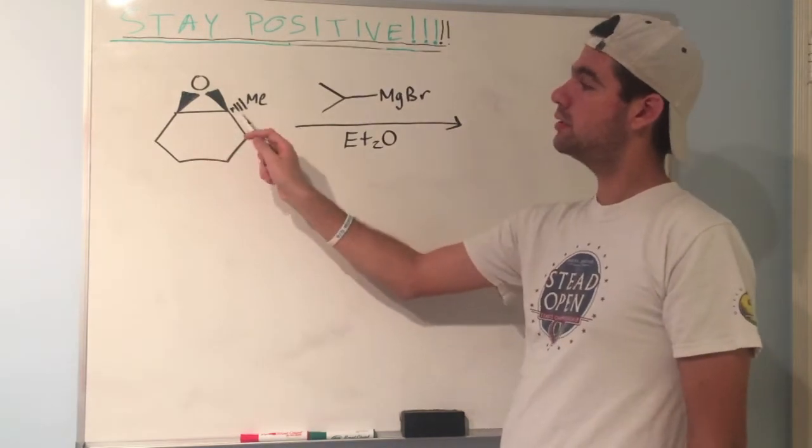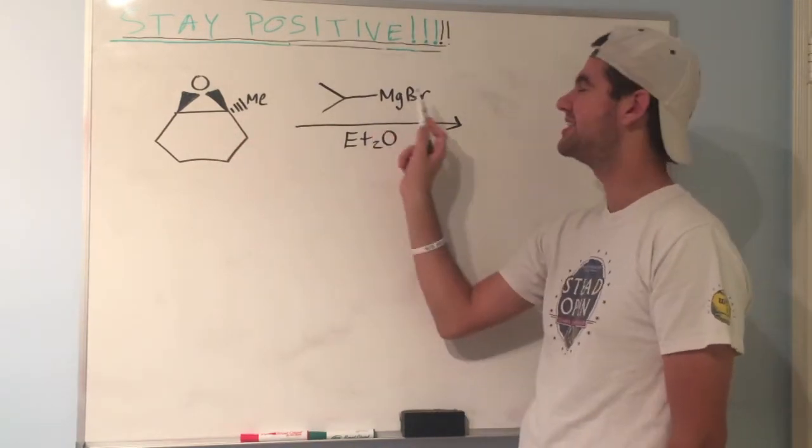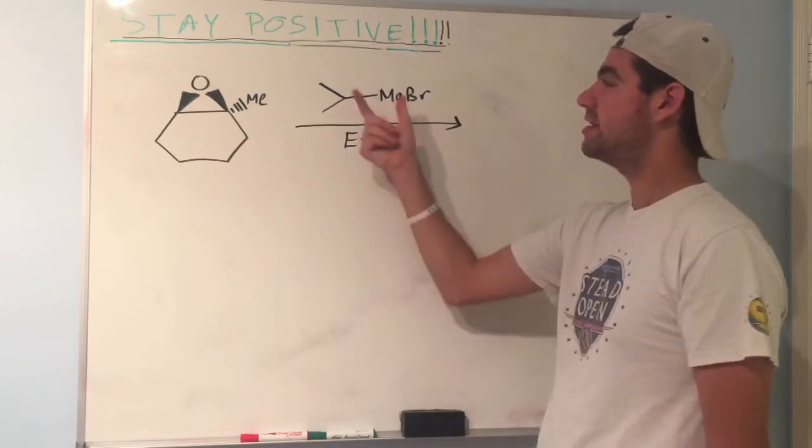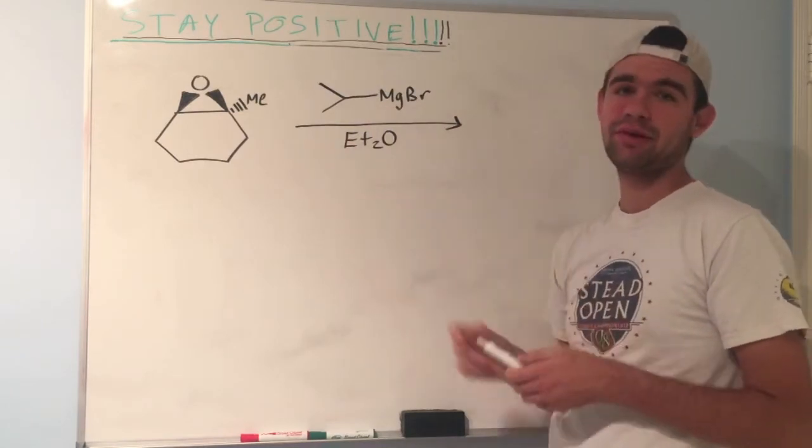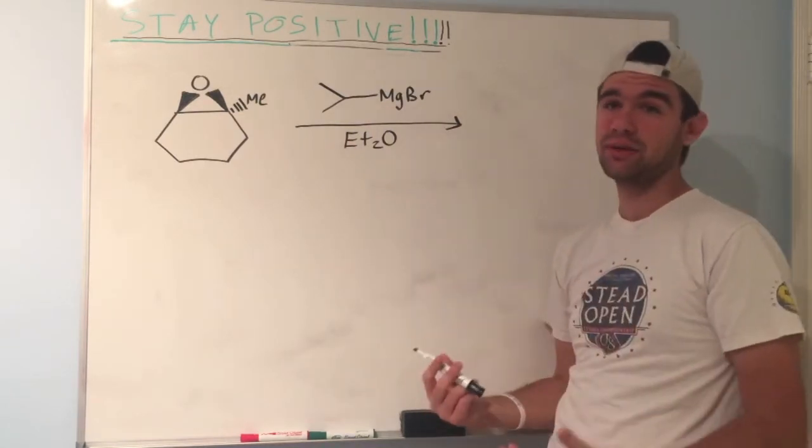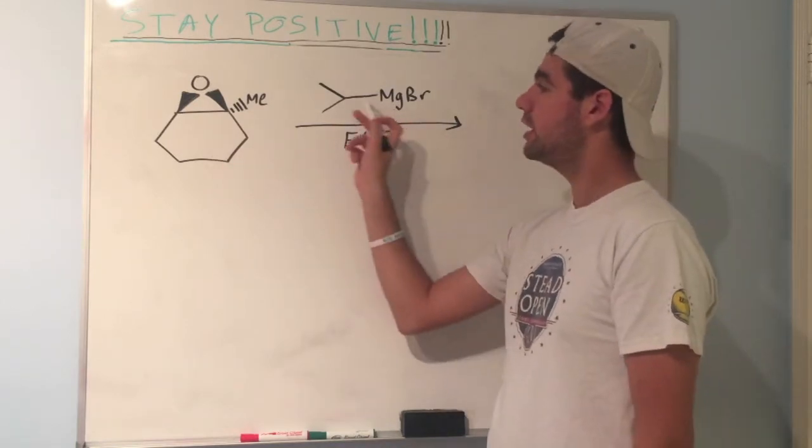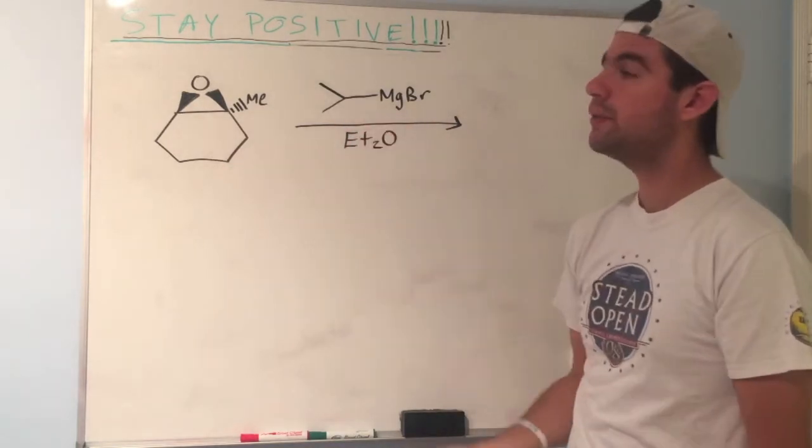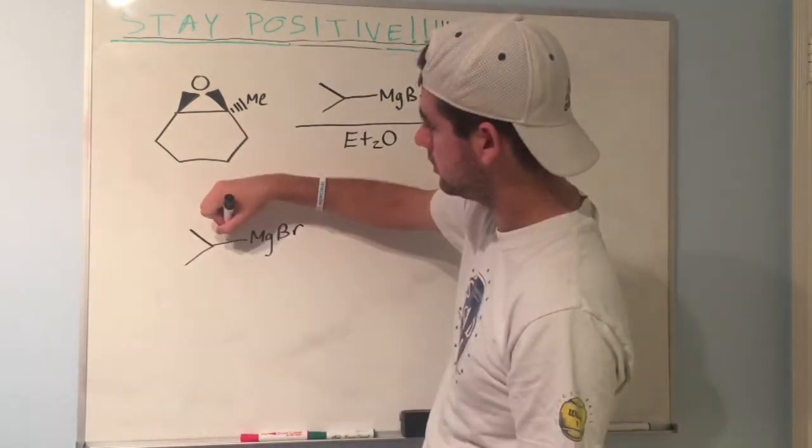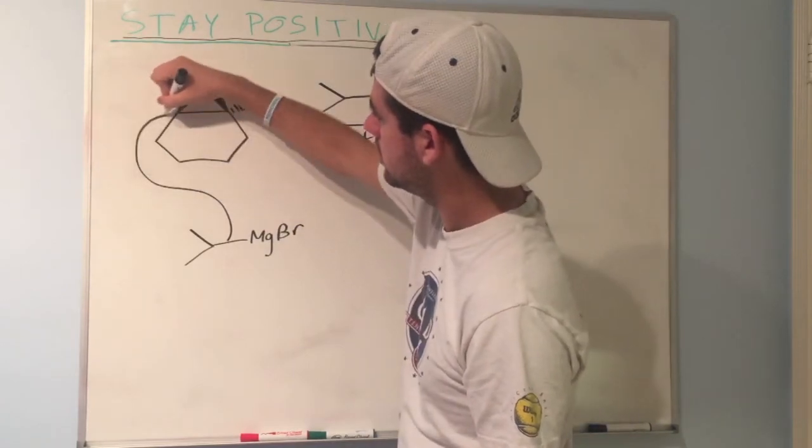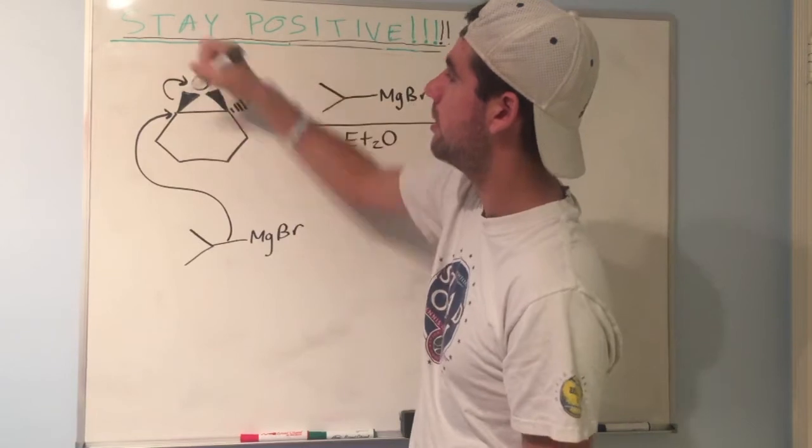Here we see another epoxide with stereochemistry, but now notice we have a really strong nucleophile. This is a Grignard reagent. If you watched the video on epoxides, I did the same example, but I'm going to do it again because it's really important to know how Grignard reagents interact with epoxides. Nucleophilic ring opening - because this is a strong nucleophile, we look for the less substituted carbon, that guy right there. Let's attack it.